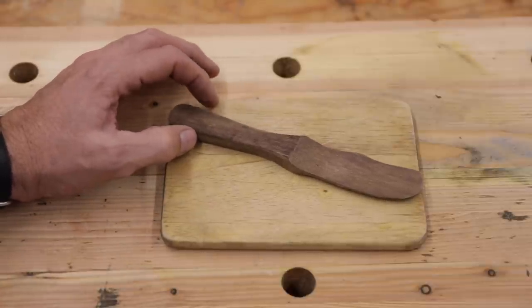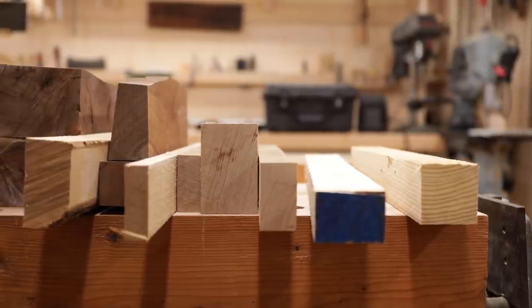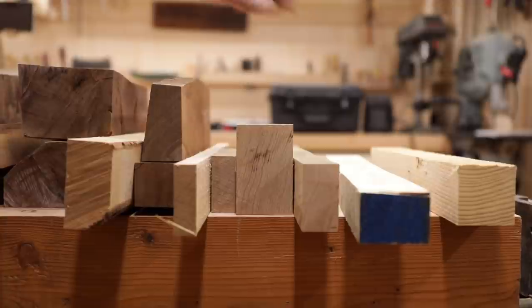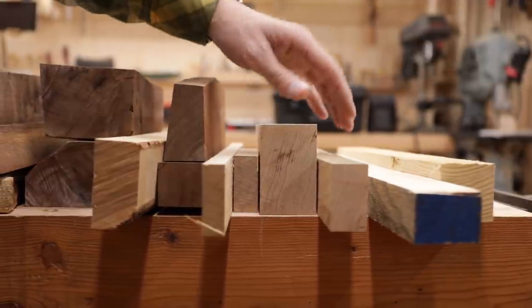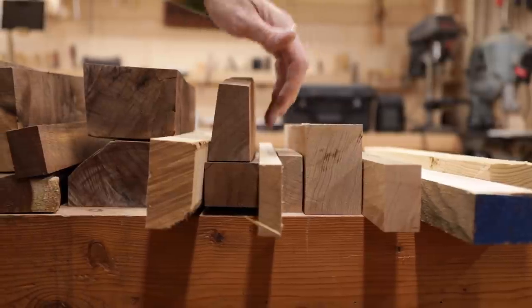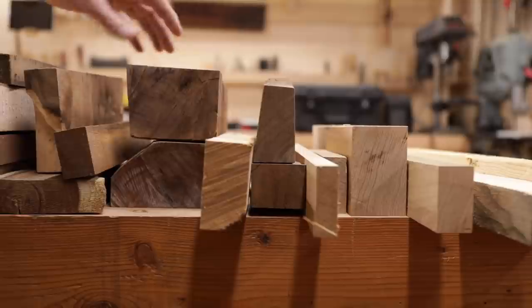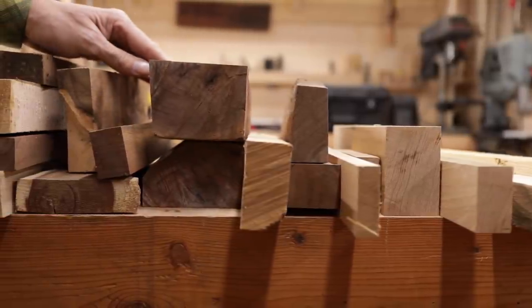So the first thing we need to decide on is what we're going to use for material. My goodness, we've got so many choices to make here. These are all sorts of scraps of wood, all sorts of species. We've got some fir here, hickory, oak, maple. Look at the walnut. Walnut's always really nice. I think the majority of the ones that we have are all made out of walnut.